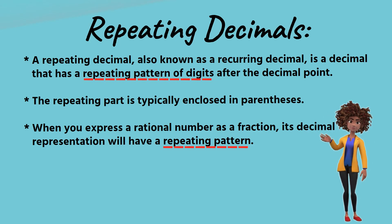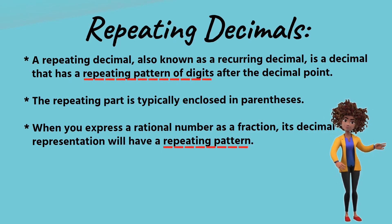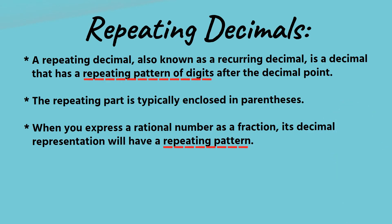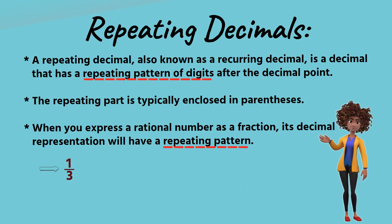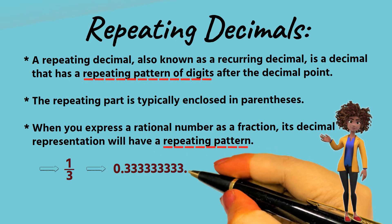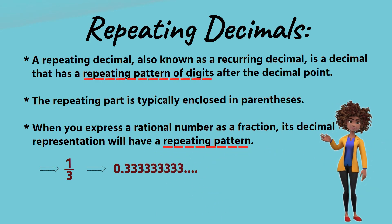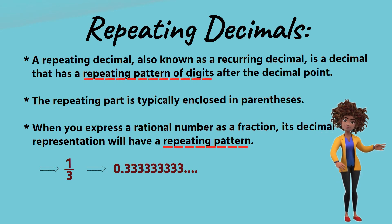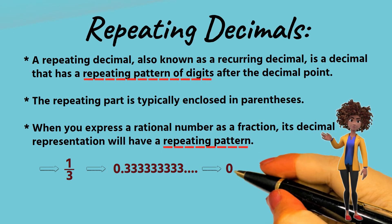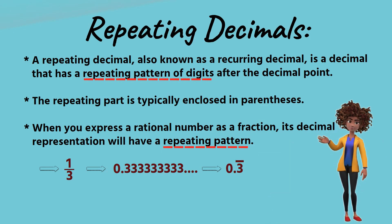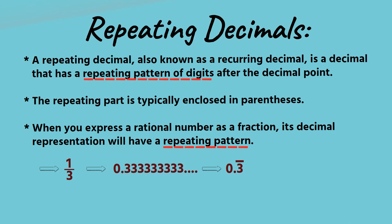Repeating decimals, also known as recurring decimals, are decimals that have a repeating pattern of digits after the decimal point. For example, 1 over 3 equals 0.33333..., where the digit 3 repeats infinitely. To represent this, you use a horizontal bar placed over the repeating digit, writing 0.3 bar. This notation indicates that the digit 3 repeats indefinitely in the decimal expansion.